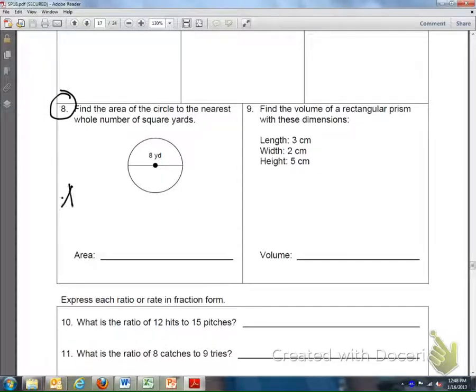The formula for the area of a circle, area, is pi times r squared. We also need to know that the radius is half of the diameter.